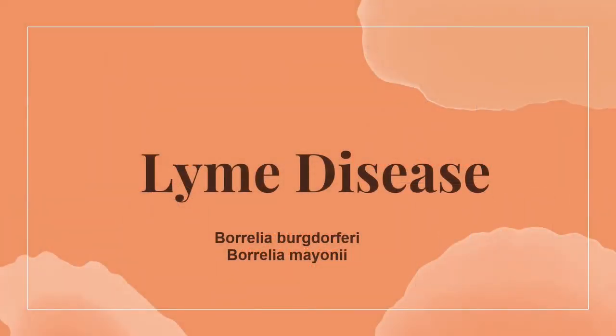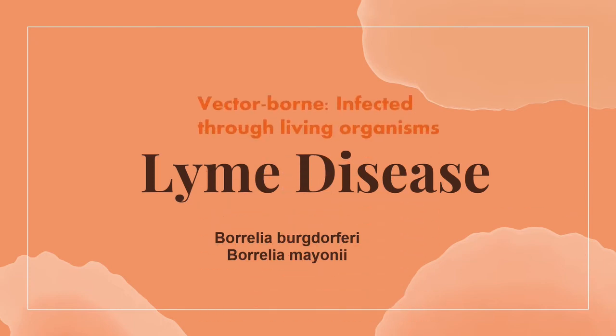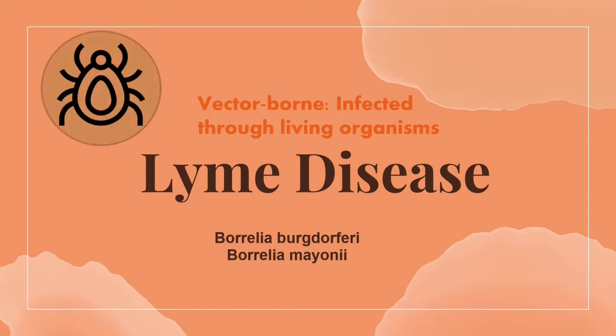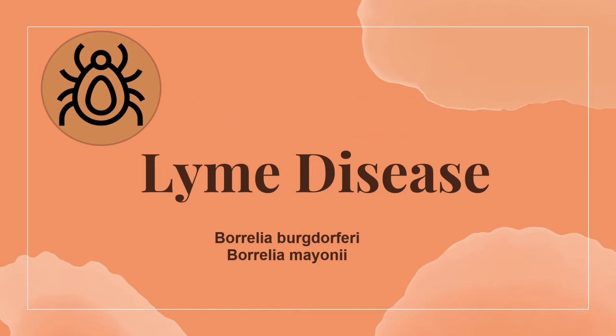That brings us to our final disease, Lyme disease. Lyme disease is caused primarily by a bacteria known as Borrelia burgdorferi, and in special cases by Borrelia myona. Lyme disease is vector-borne, meaning individuals are infected through vectors. Vectors are living organisms that can transmit infectious pathogens such as bacteria or viruses. The vector that transmits Borrelia burgdorferi are ticks. Ticks are found in nature, typically in wooded areas, so many people often get bit by ticks during hikes.